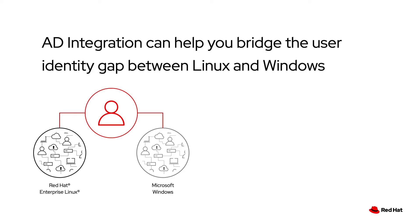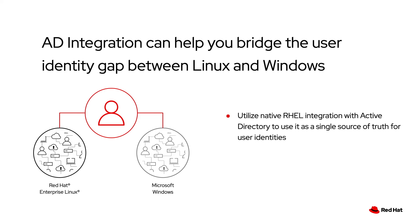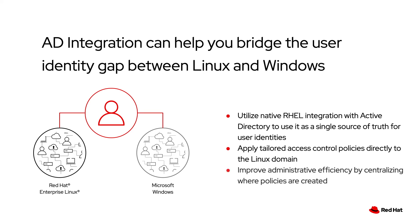Number three, identity management in RHEL allows you to integrate with your Active Directory environment, allowing you to bridge the gap between your Windows user identities and your Linux systems. You are able to utilize native RHEL integration with Active Directory to use it as a single source of truth for your user identities, but you can apply tailored access control policies directly to your Linux domain. This improves your administrative efficiency by centralizing where your policies are created and how they are implemented on your users.